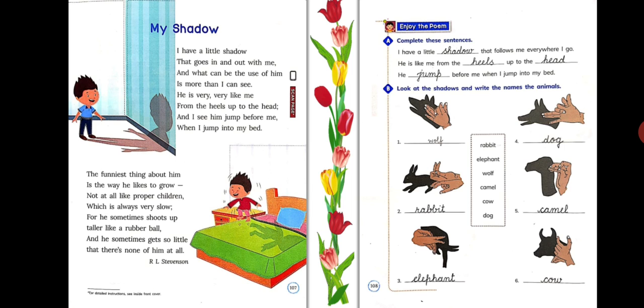First picture is of, first shadow is of a wolf. Then, second one is of a rabbit, third one is an elephant, fourth is a dog, fifth one is a camel, sixth one is a cow.